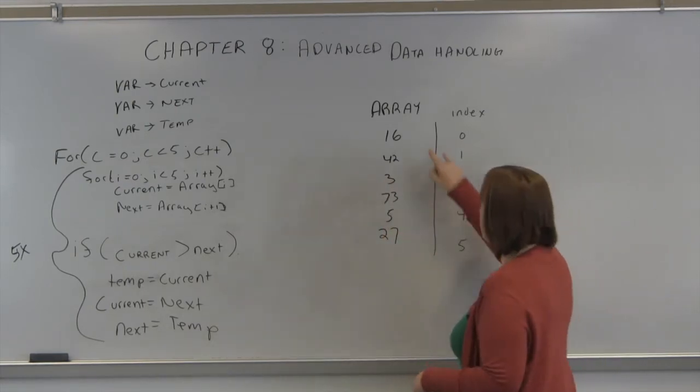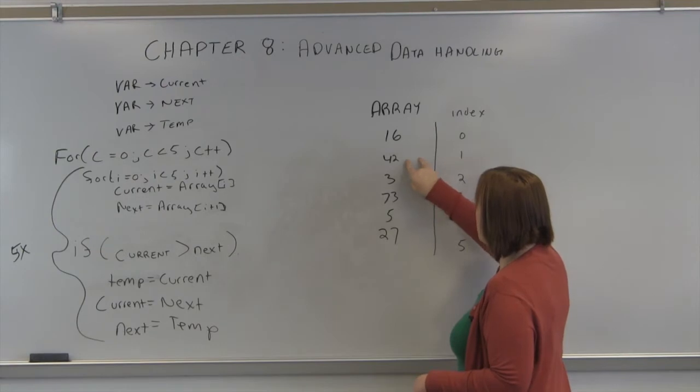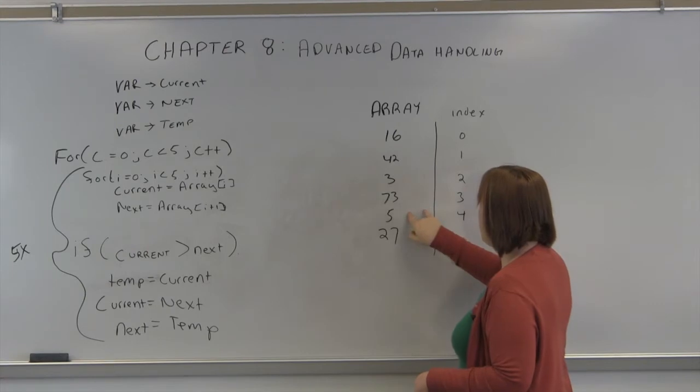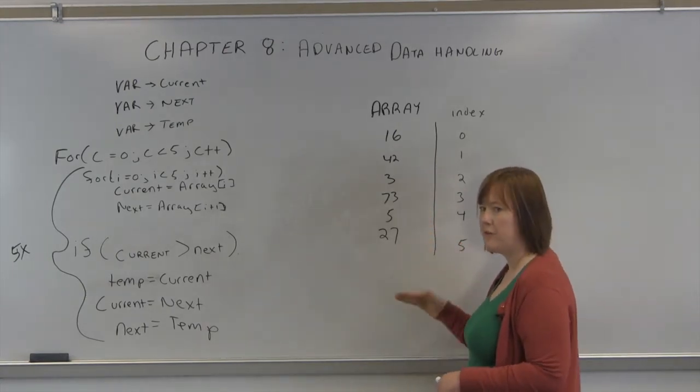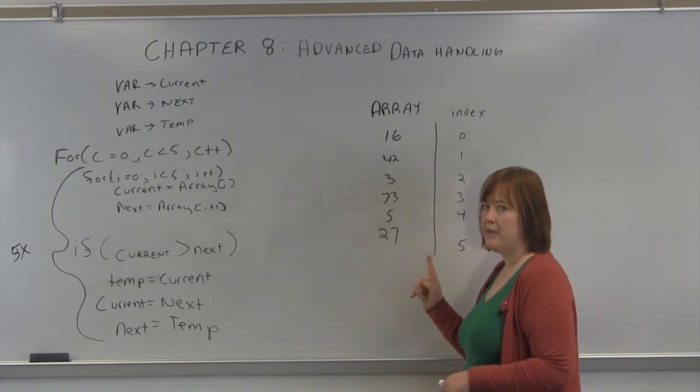Because what's going to happen is we're going to start by comparing one to two, two to three, actually zero to one, one to two, two to three, three to four, four to five. There's nothing to compare the last one to. So you've always gone through one less than the number of the array.